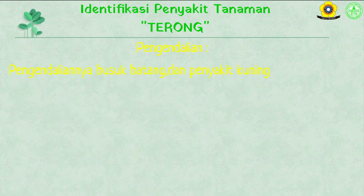Pengendalian busuk batang dan penyakit kuning: Pertama, mengatur jarak tanam agar area tanam tidak terlalu lembab. Kedua, mencabut dan memusnahkan tanaman yang terserang agar tidak menyebarkan ke tanaman yang sehat. Ketiga, jika serangan sudah termasuk berat, maka alternatif penyemprotan fungisida juga dapat dilakukan seperti penanganan pada serangan busuk buah.